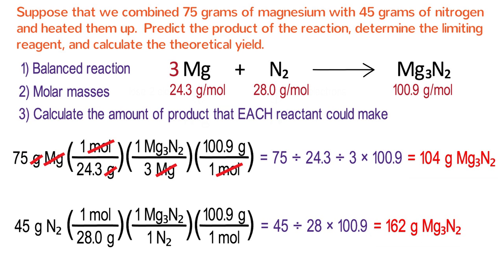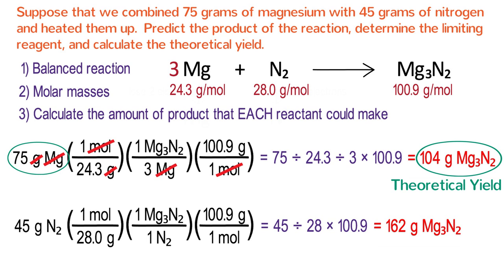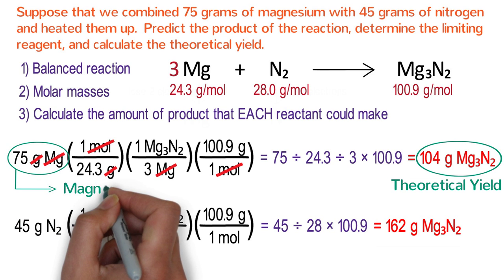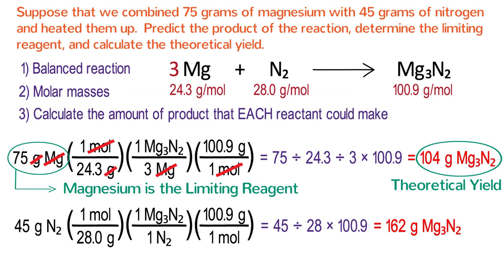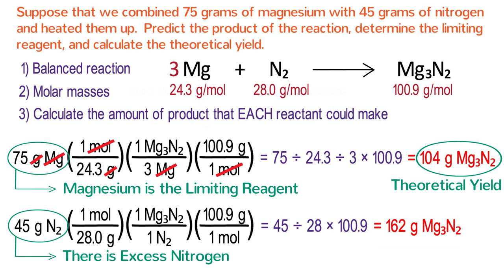104 grams of magnesium nitride is the smallest amount of product, so it is the theoretical yield. It is impossible to make more than that because you will run out of magnesium — magnesium is the limiting reagent. After the reaction, some nitrogen will remain, so nitrogen is in excess.